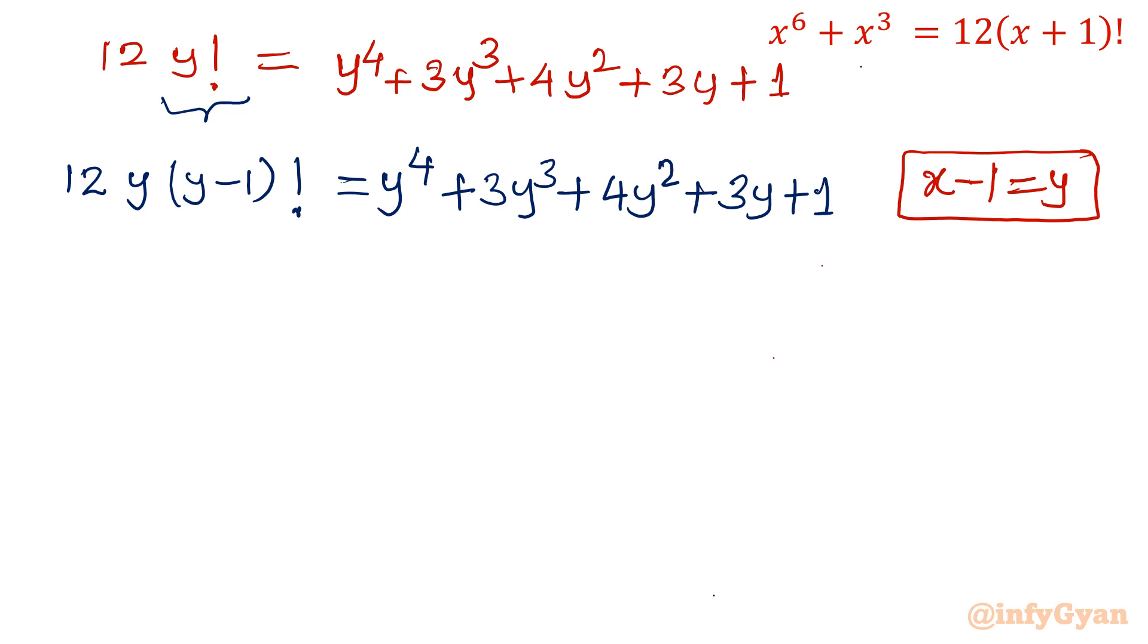Now divide this complete equation by y. So 12 times y minus 1 factorial would be equal to y cube plus 3y square plus 4y plus 3 plus 1 over y. So remember always, what was our domain: x greater than or equal to minus 1, so that won't change.